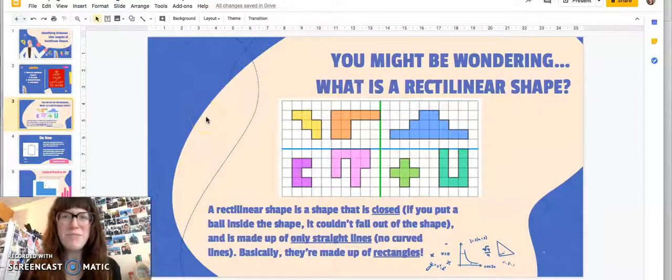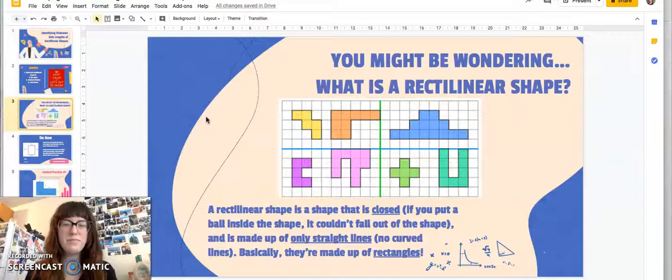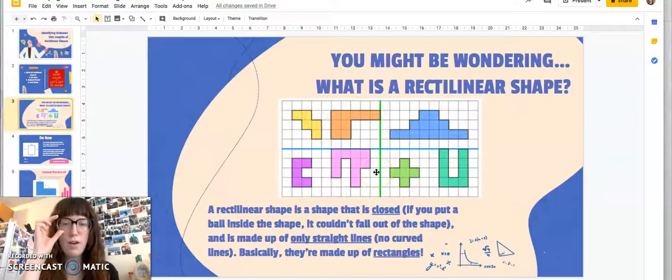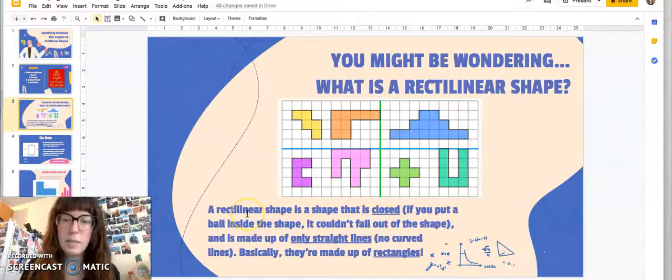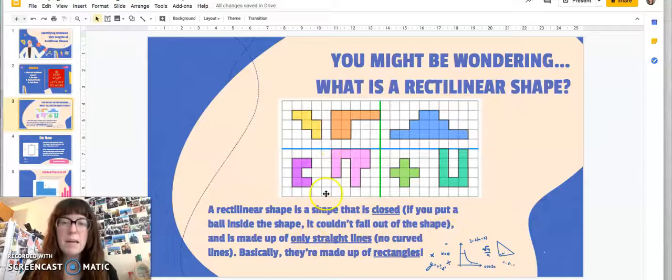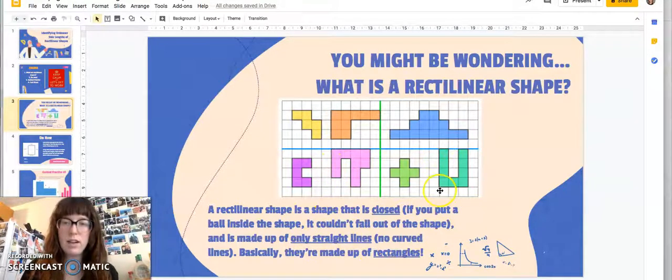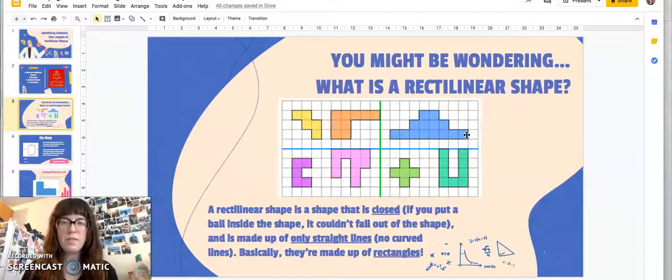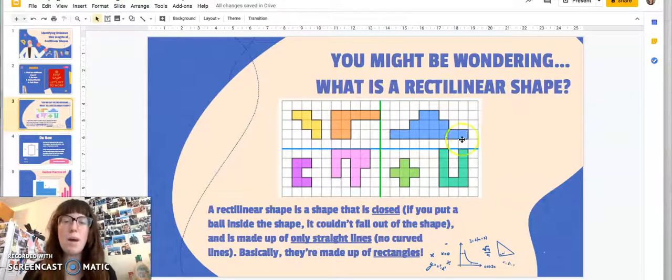You might be wondering what is a rectilinear shape? What is Ms. Paglarani talking about? So these are all examples of rectilinear shapes. A rectilinear shape is a shape that is closed. So if you were to put a ball inside of this shape it couldn't fall out of the shape. It would hit a wall or a side every single time. And it's made up of only straight lines. So you notice that none of the lines go off this grid here. They're all straight. None of them are curved. So basically rectilinear shapes are made up of rectangles. That's important for us to know. We can break them up into rectangles.